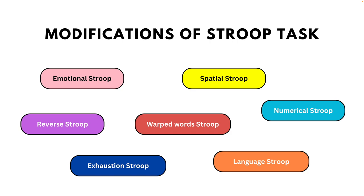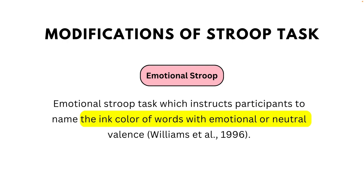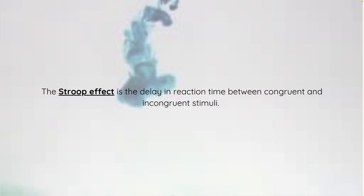Numerous modifications of the Stroop task have been proposed over the years. For example, the emotional Stroop task is a widely used modified version of the classic Stroop task, which instructs participants to name the ink color of words of emotional or neutral valence. A key concept studied in the classical Stroop task and its modified variants is called the Stroop effect.